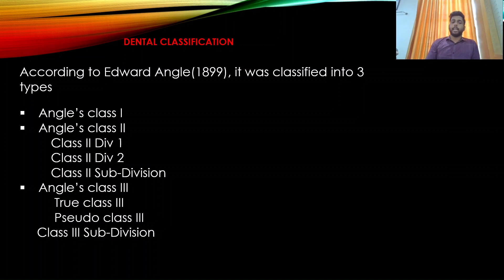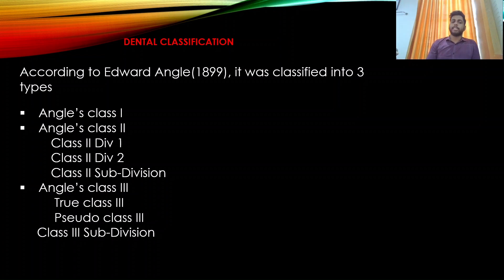Class 3 is where the mesiobuccal cusp of the maxillary molar falls in the interdental space between the maxillary first and second molars. We have true Class 3 and pseudo Class 3. Class 3 subdivision means Class 3 on one side and Class 1 on the other side.